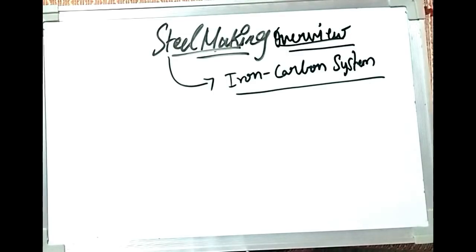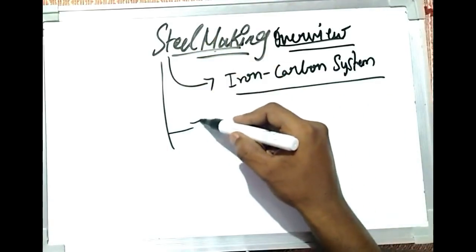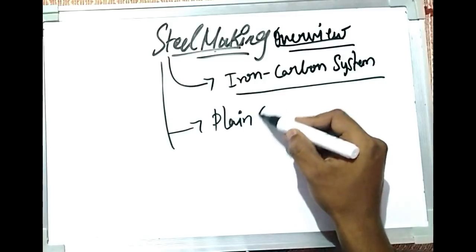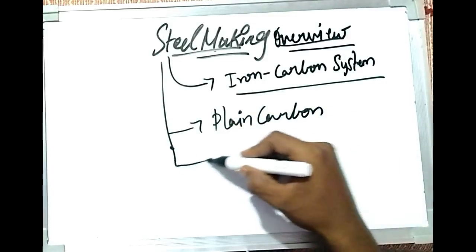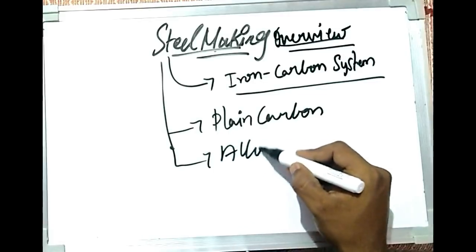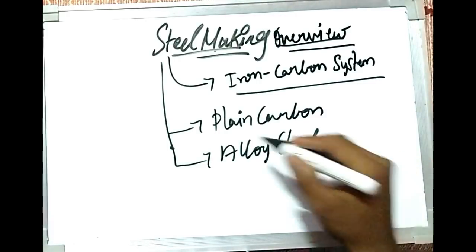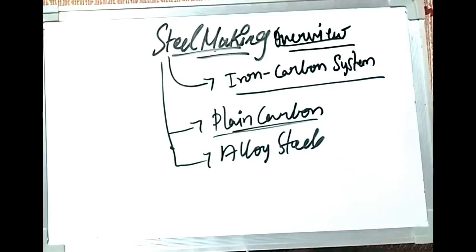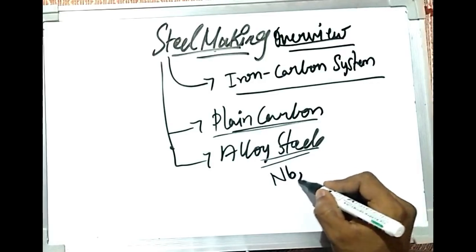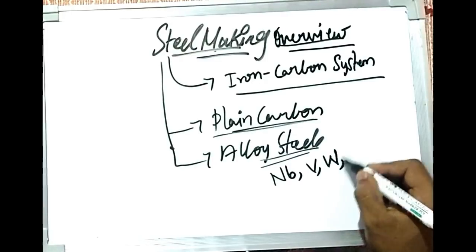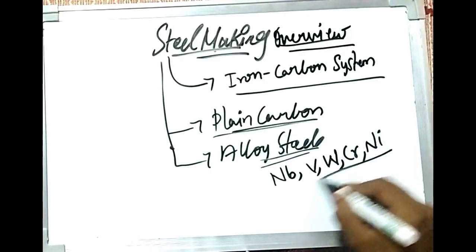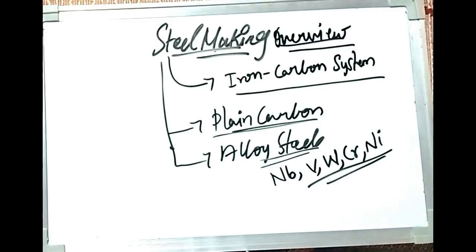Steel is classified into two main types: plain carbon steels and alloy steels. In plain carbon steel, the major constituent is only carbon. In alloy steels there are some other elements generally like niobium, vanadium, tungsten, chromium, and nickel.